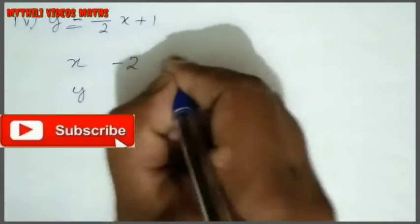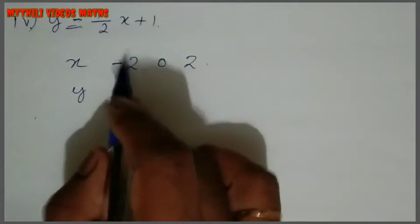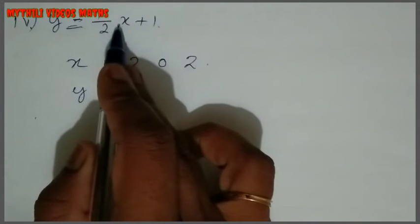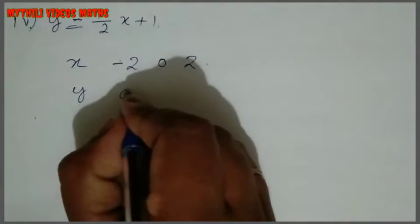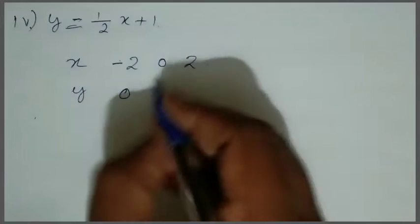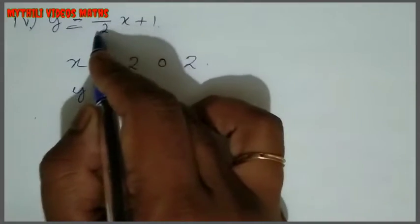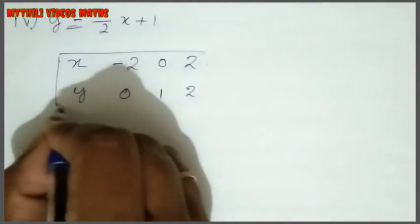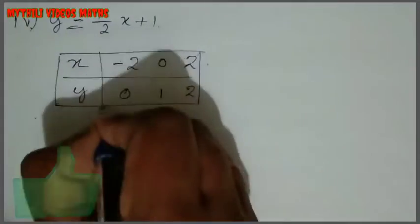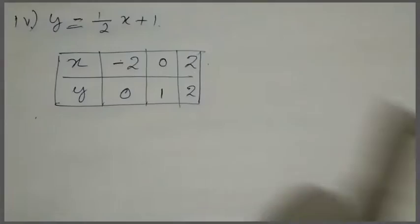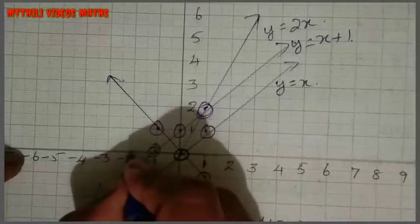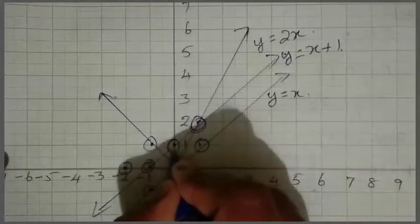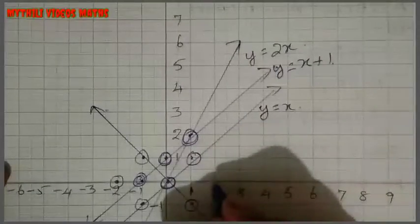So: x = -2, y = 0. x = 0, y = 1. x = 2, y = 2. Then applying: 0 + 1 = 1, and 1 + 1 = 2. So the points are: (-2, 0) — x-axis -2, y-axis 0; (0, 1) — x-axis 0, y-axis 1; (2, 2) — x-axis 2, y-axis 2. Mark all points and draw the line.